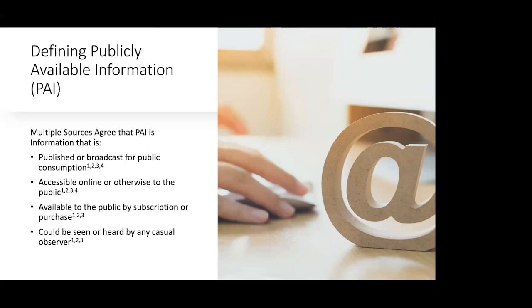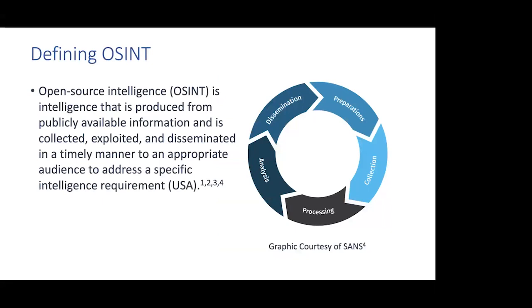PAI is also anything that can be seen or heard by a casual observer. That leads into our definition of open source intelligence: intelligence produced from publicly available information and then collected, exploited, and disseminated in a timely manner to an appropriate audience for a specific intelligence requirement. That definition comes from both the DOD and from Public Law 109-163. The definition of open source intelligence, just like PAI, is subject to a variety of debate — every intelligence agency seems to define it differently, and the U.S. government has not yet agreed on a firm definition.